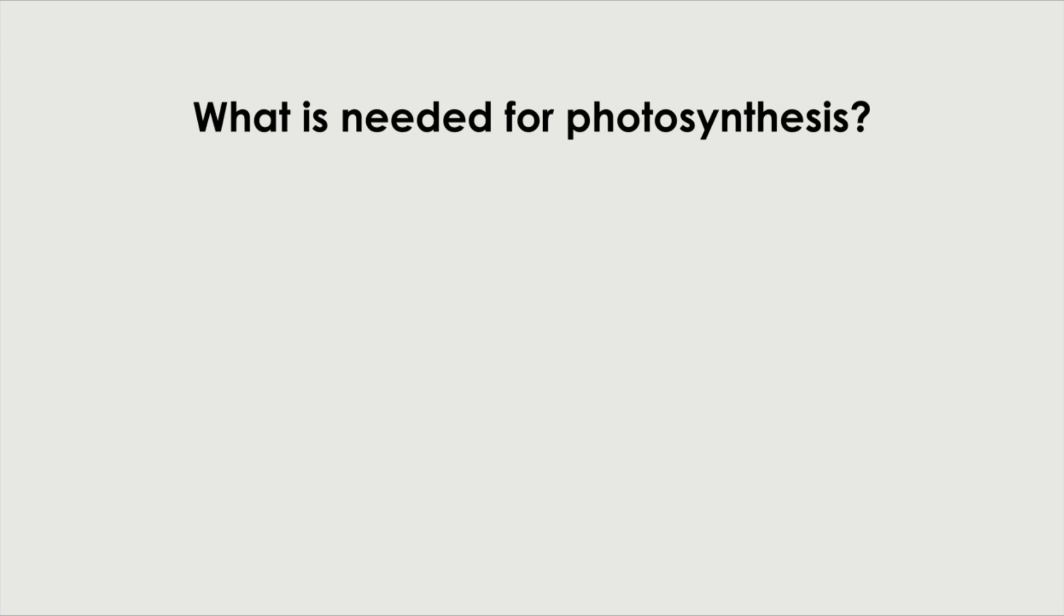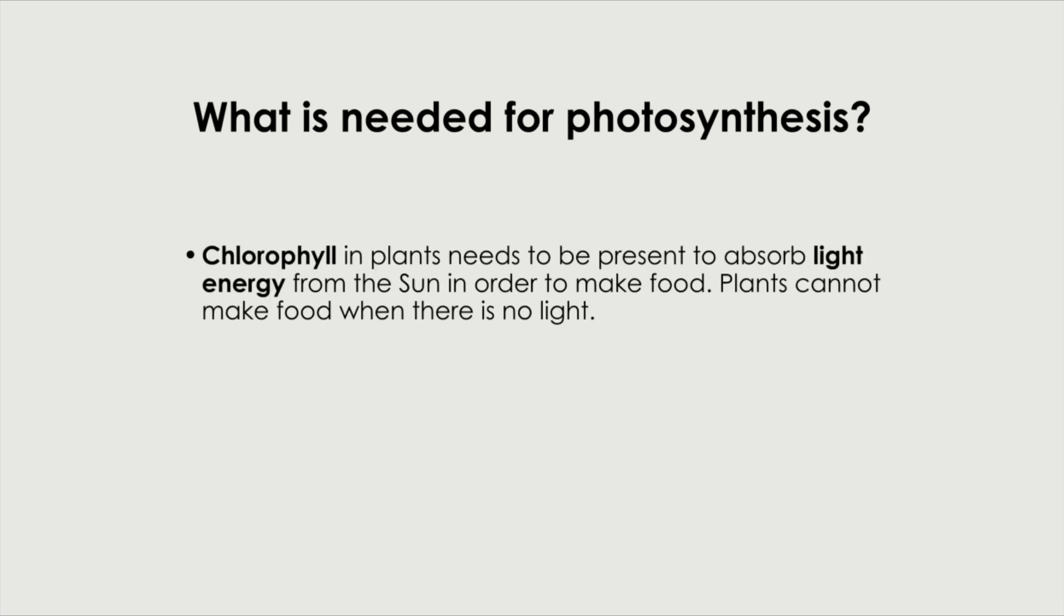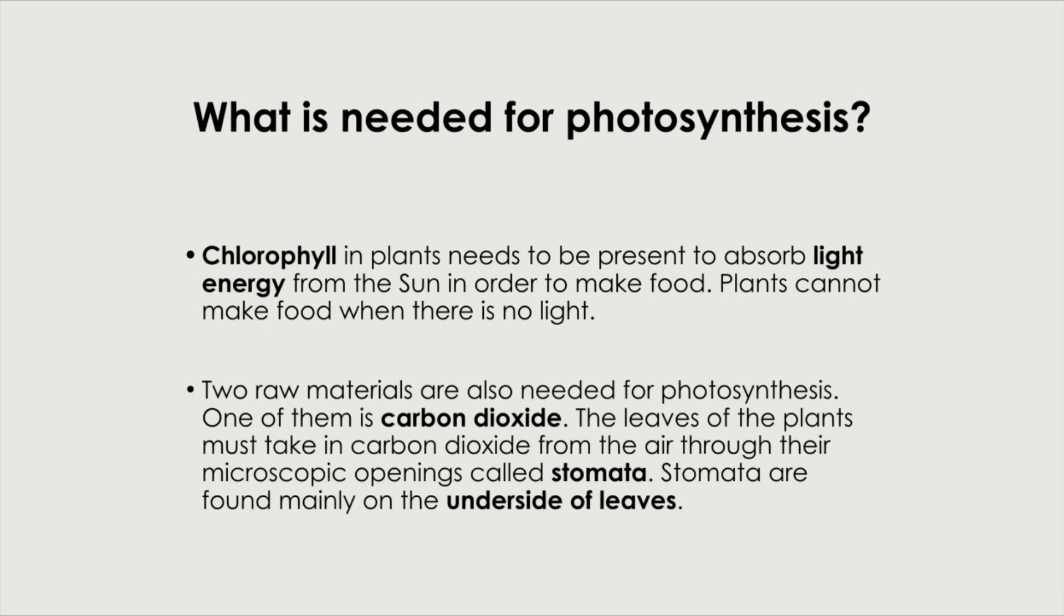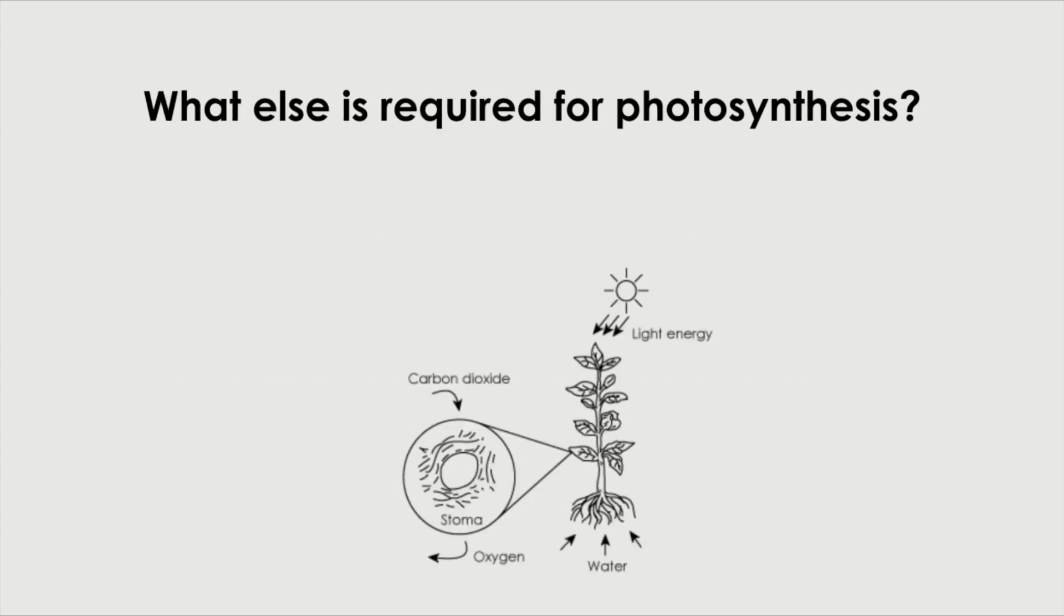What is needed for photosynthesis? Chlorophyll in plants is needed because it traps the light energy from the sun. Plants cannot make food when there is no light, which is why photosynthesis only occurs during the day or when light is present. Two raw materials are also needed for photosynthesis. We need carbon dioxide. The leaves of the plants must take in carbon dioxide from the air through their stomata. Stomata are tiny openings and they are mainly found on the underside of the leaves. They're more abundant on the underside of the leaves. What is the other thing that's needed for photosynthesis? That will be water. And water is usually absorbed by the roots from the soil.